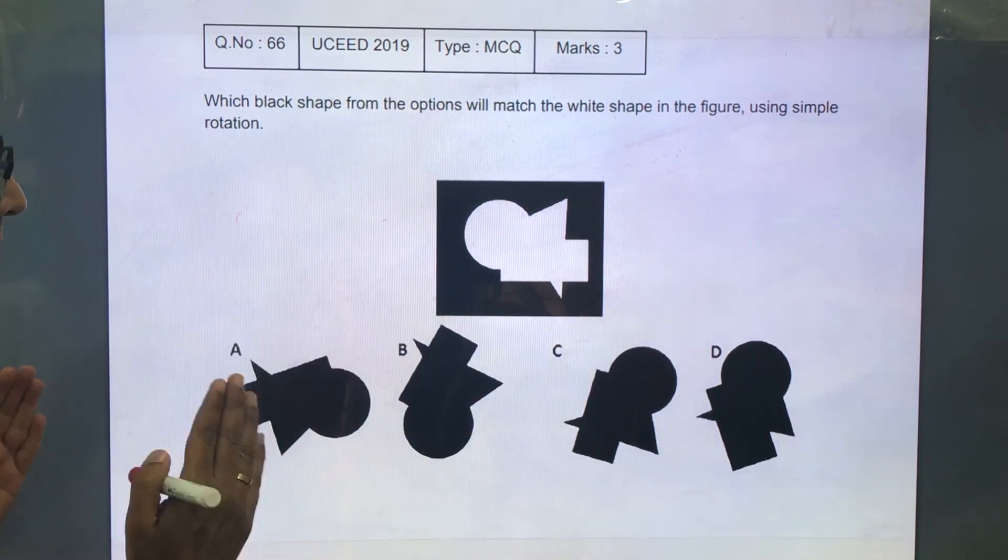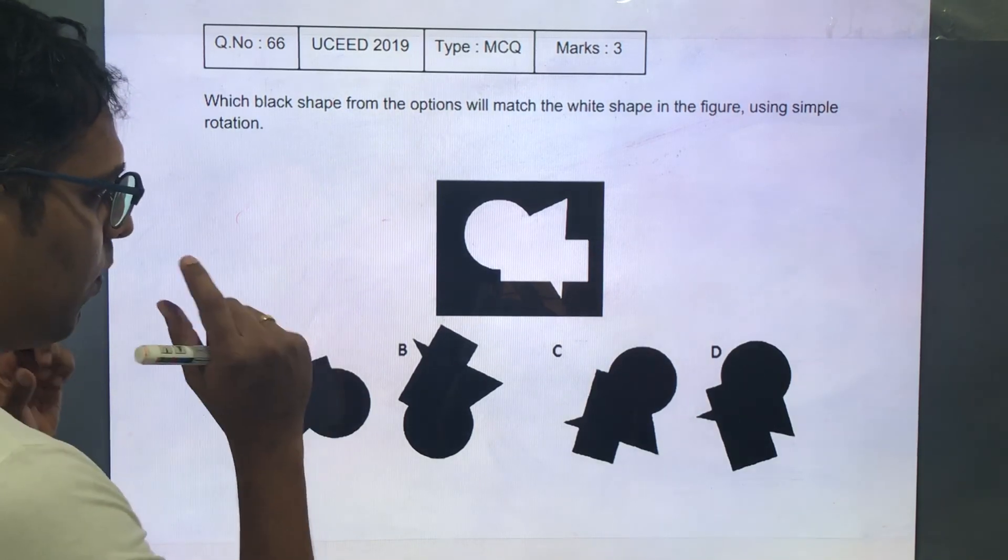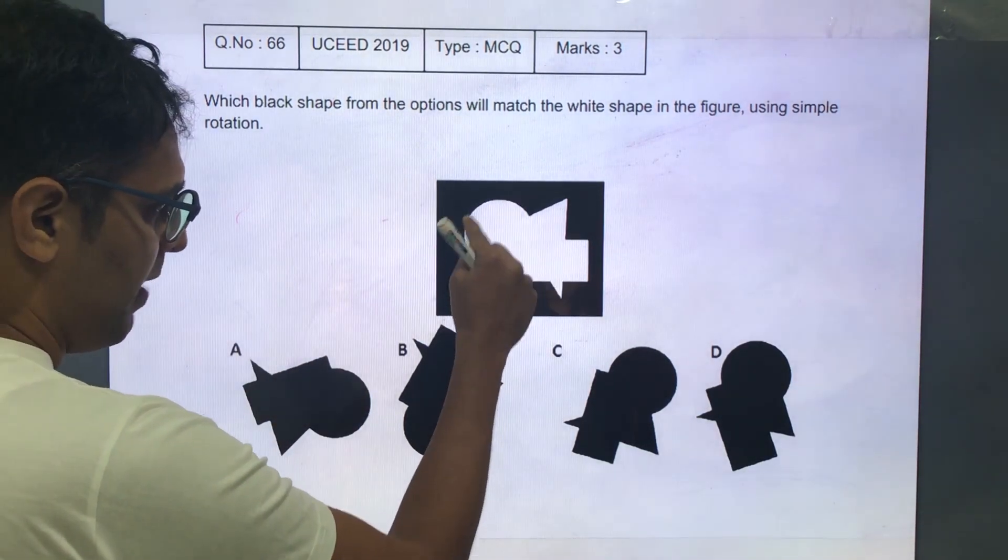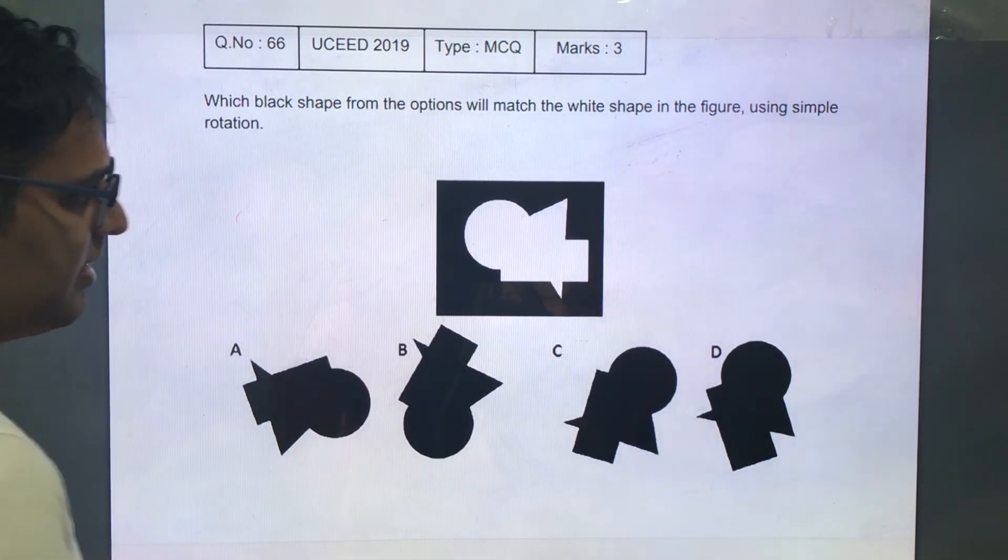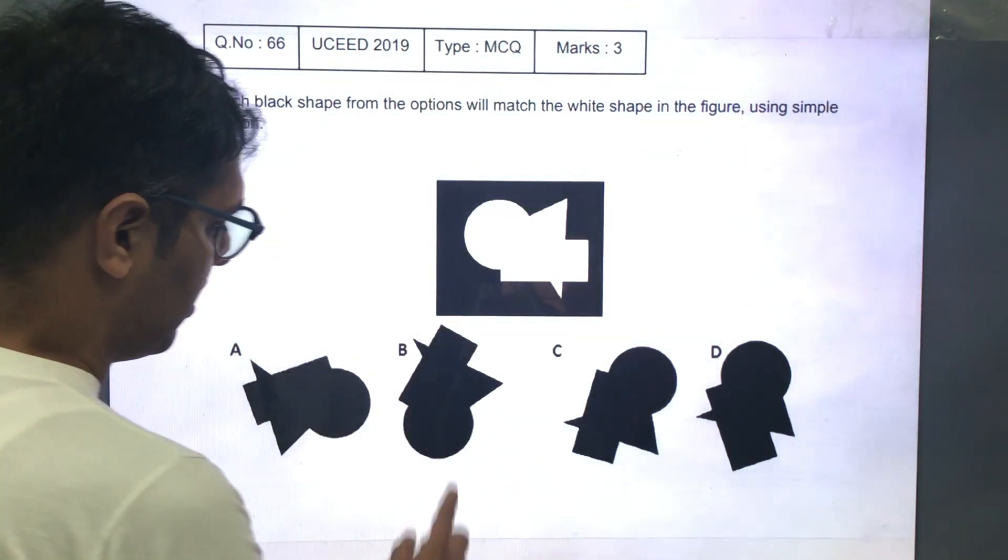Now how do we do this? The method to do this is take one piece at a time or one part of the shape at a time and then start comparing from there. In this case let us take the circle.